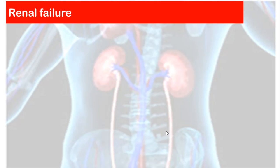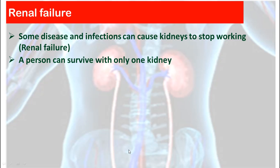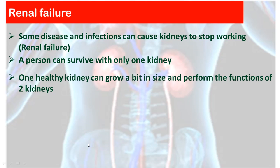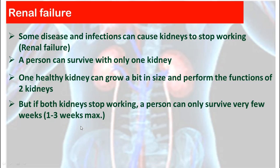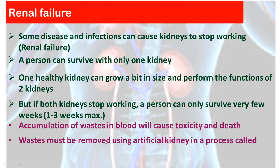Renal failure — the word renal indicates something related to kidneys. Some diseases or infections can cause kidneys to stop working, resulting in renal failure. A person can survive with only one kidney, and one healthy kidney can grow a little in size and perform the function of two kidneys. But if both kidneys stop working, we will have renal failure, which is caused by accumulation of wastes that will cause toxicity and death, and wastes must be removed by artificial kidneys in a process called dialysis.